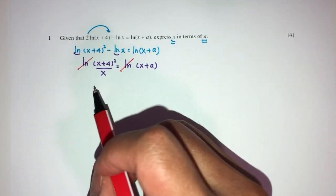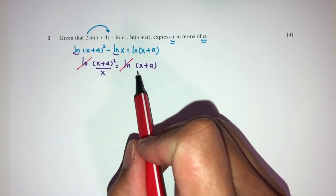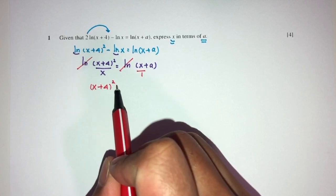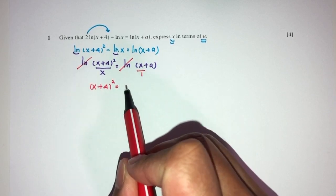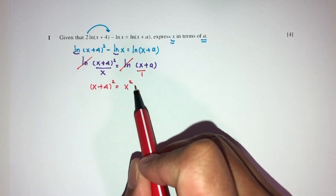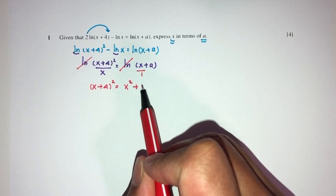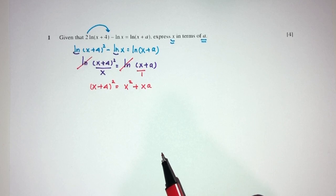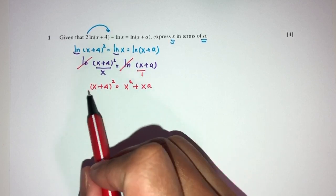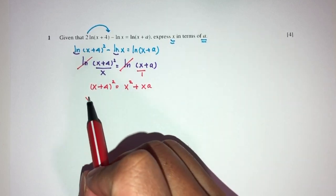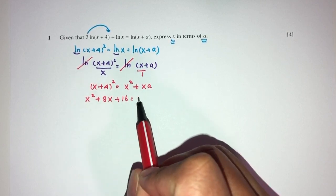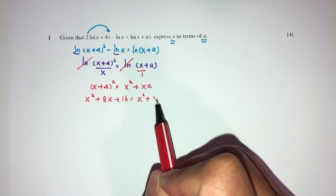Now you will have x plus 4 squared. We can send this one over here, becomes x squared plus xA. Expand this one, let's see what happens. You will have x squared plus 8x plus 16 equals x squared plus xA.